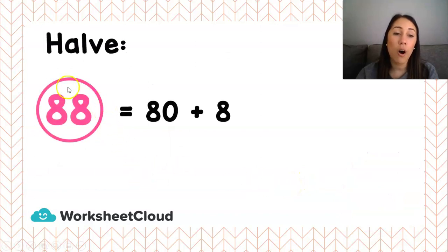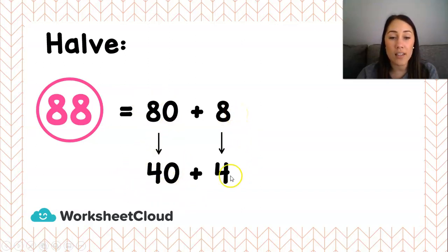Now, I want to halve 88. So now, I'm first going to rename. That was our first step. We've already done that before. And we said that 88, if I rename it, is 80 plus 8. Now, I'm going to halve 80 underneath. And I'm going to say that is 40. And I'm going to halve 8 underneath. And I'm going to say that is 4. And now, I'm going to add them together. I'm going to say that 40 plus 4 is 44.